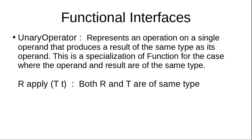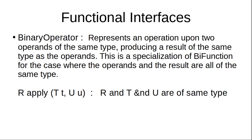Two more important interfaces are UnaryOperator and BinaryOperator. UnaryOperator extends Function — in Function the input is type T and the result is type R, but if your input and result are both the same type, prefer UnaryOperator. BinaryOperator extends BiFunction — in BiFunction there are two input parameters and a return type R, but if all three are the same type, prefer BinaryOperator.